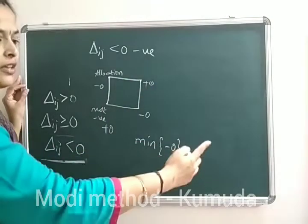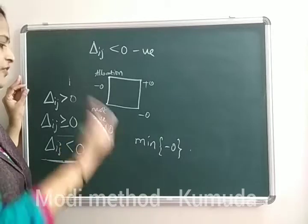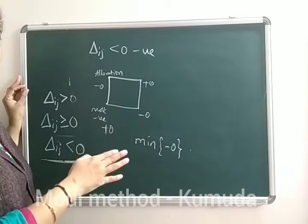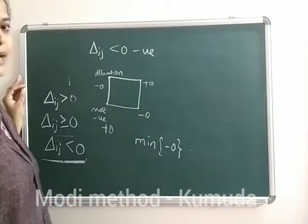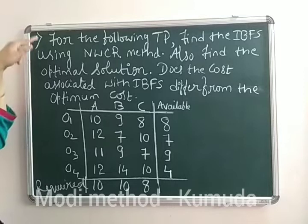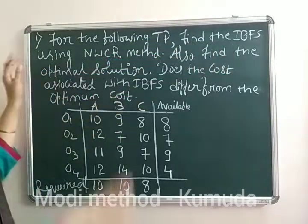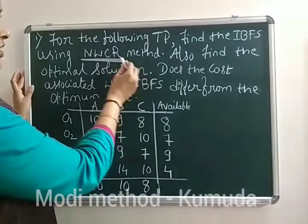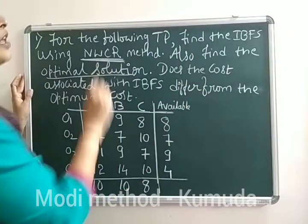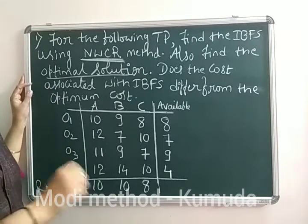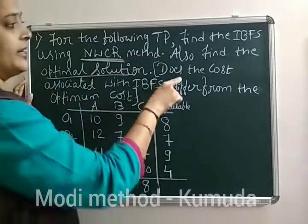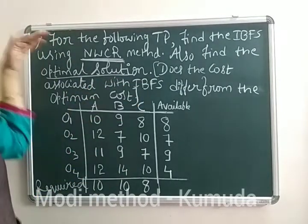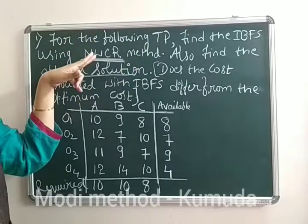After obtaining the revised matrix, we start again from Step 2: calculate UI and VJ, then calculate delta IJ. If all delta IJs are positive, we have reached the optimal solution and calculate the TTC. Now consider the first example problem: find the IBFS using the NWCR method, then find the optimal solution using the Modi method, and also check whether the IBFS value differs from the optimal solution obtained by Modi method.